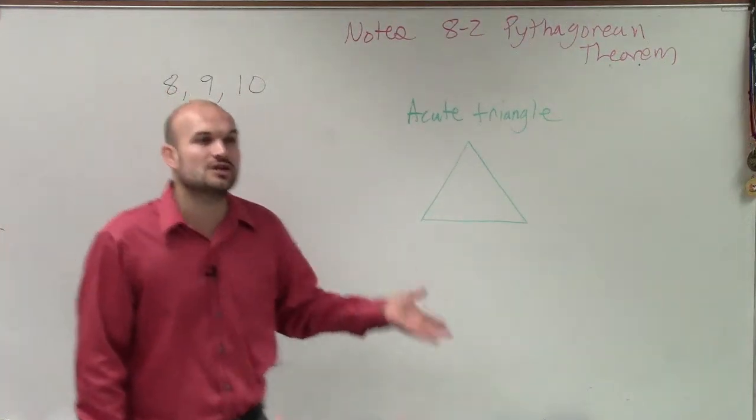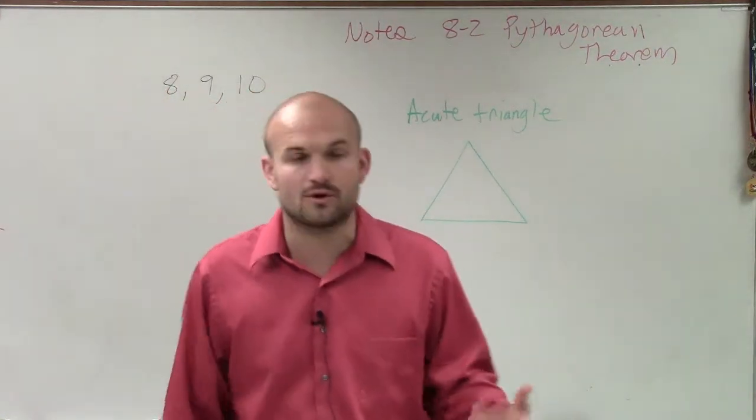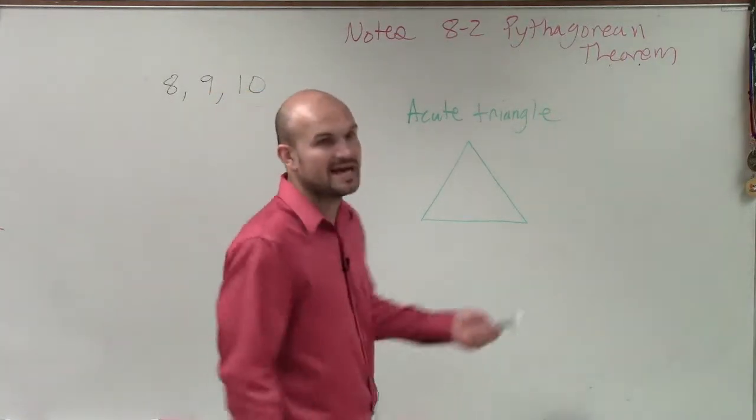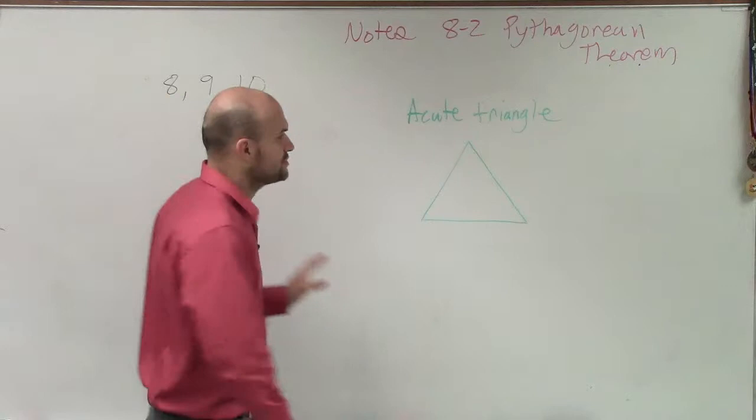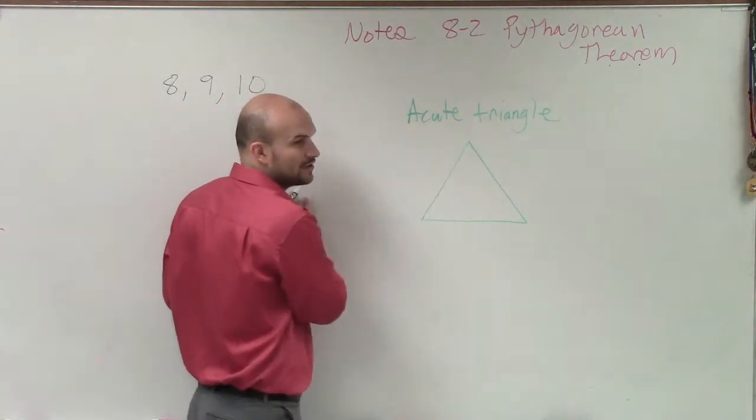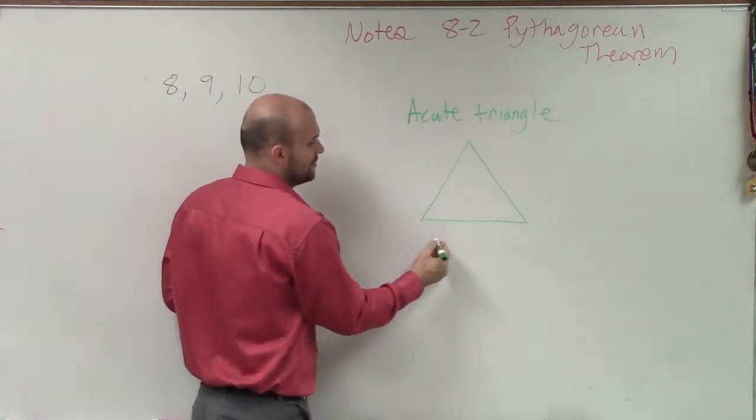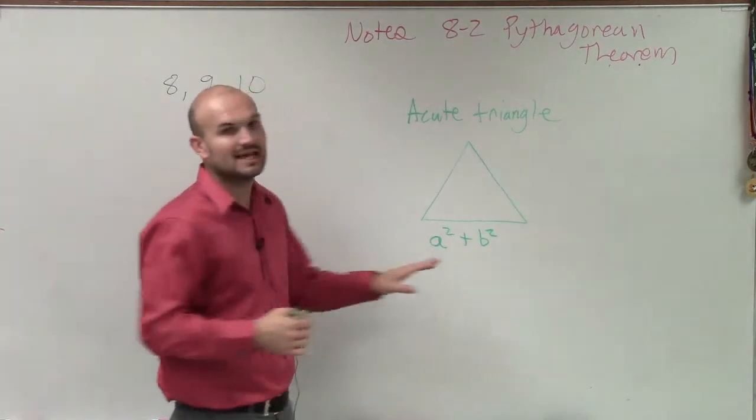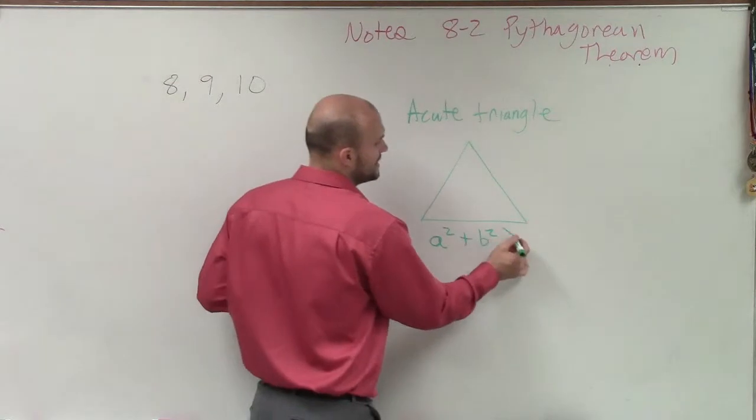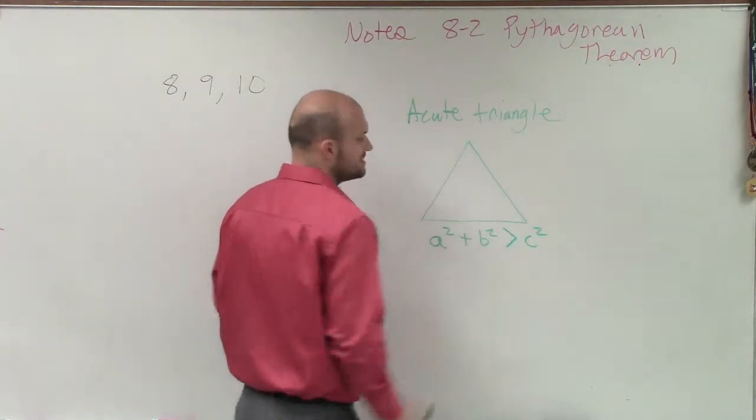Now, how do we determine if a triangle is going to be acute or not? Well, we're going to go back to our Pythagorean theorem, but now we're going to use a Pythagorean inequality. So to determine if a triangle is acute, we take a squared plus b squared, and then the length of these two have to be larger than c squared.